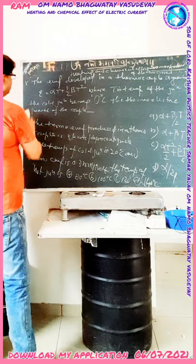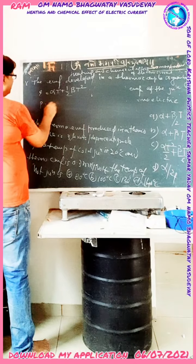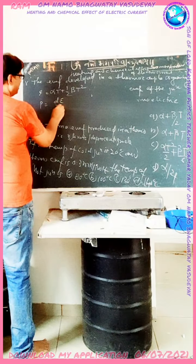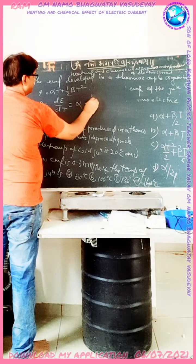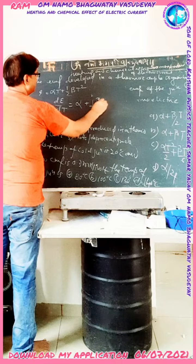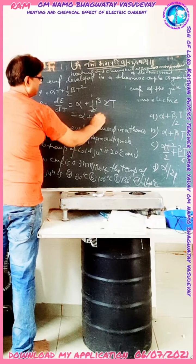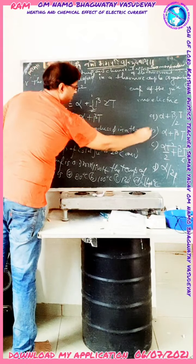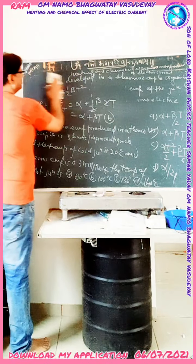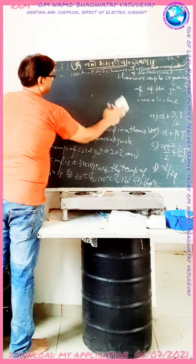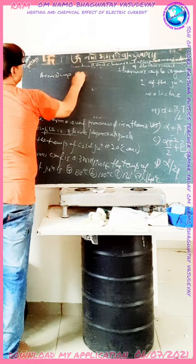To solve the first MCQ: the thermoelectric power P = de/dt. Differentiating e = αt + ½βt² with respect to t, we get: de/dt = α + βt. So the thermoelectric power is α + βt, and the correct option is B.